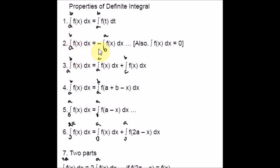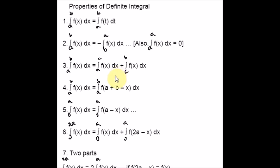In case you are going to reverse the limits, the integral from a to b of f(x) dx is equal to minus the integral from b to a of f(x) dx. If you are going to change the limits upside down, you have to insert a negative sign. Also, the integral from a to a of f(x) dx is equal to zero, because when you plug in the upper limit and subtract the lower limit, you will just get zero. This is a very straightforward property.